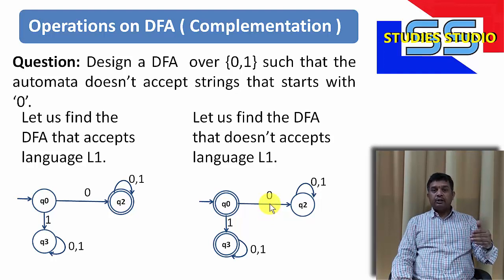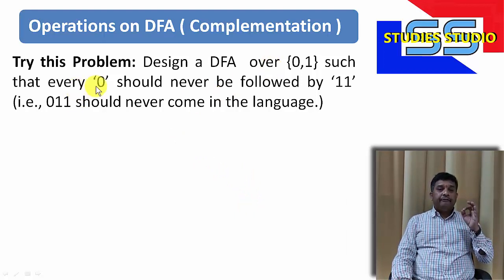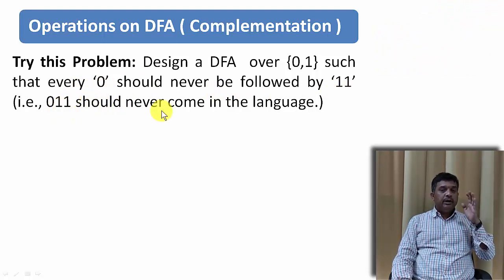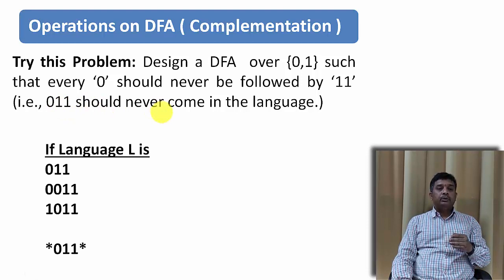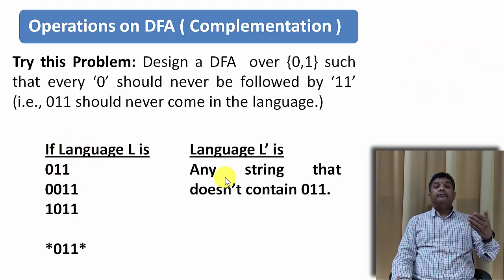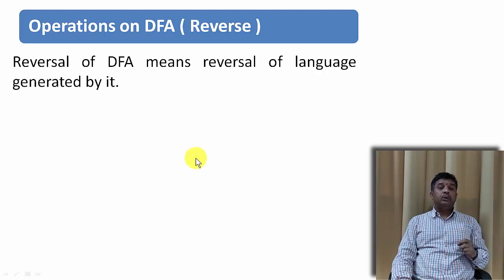I hope you understood. Try this problem: design a DFA where every 0 is never followed by 11. It means the substring 011 should never appear. Find the language that accepts 011 as a substring, then convert it to its complement by making final states non-final and non-final states final.